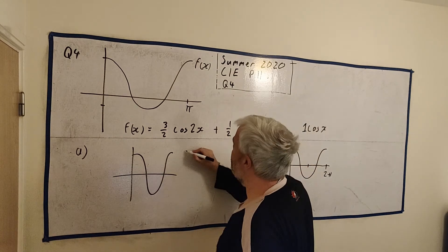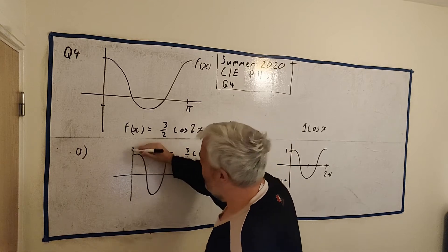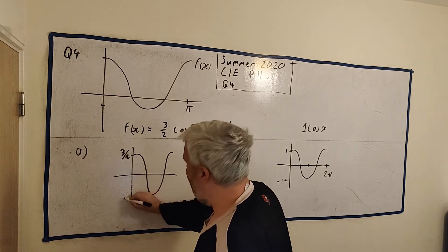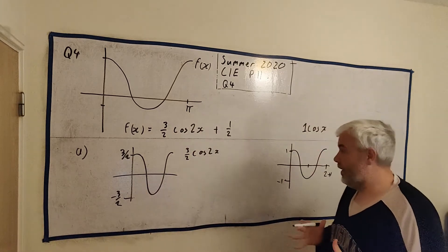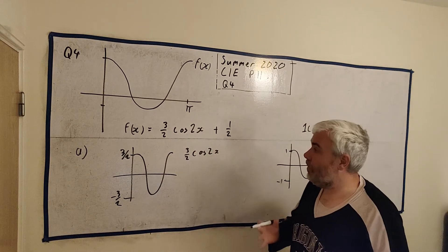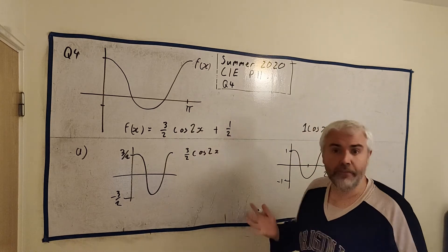If I leave the half off, so this will just be 3 over 2 cosine 2x. This is simply 3 over 2 and minus 3 over 2. So that's what this number here basically tells us. The number in front of a trigonometric function tells us that.